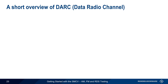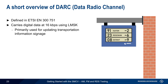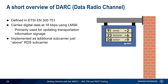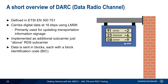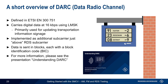The last topic is DARC, or the Digital Radio Channel. DARC is defined in ETSI EN 300 751 and carries digital data at 16 kilobits per second using a special form of minimum shift keying. DARC is not widely used, with the main application being wirelessly sending transportation-related information to signage. DARC is implemented as an additional subcarrier just above the RDS subcarrier, and data is sent in the form of blocks, each with a block identification code. Please see the separate presentation, Understanding DARC, if you're interested in learning more.